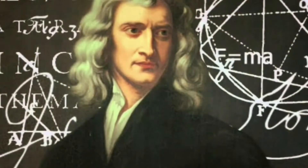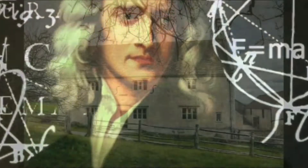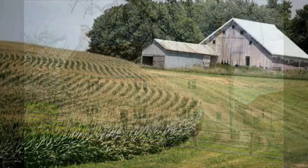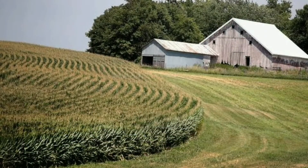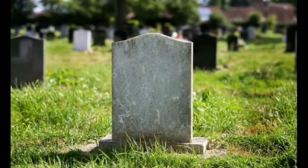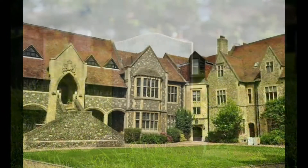He was a physicist, mathematician, and astronomer. He was born on 4th January 1643 in Woolsthorpe, England. He was a farmer's child; his father's name was Isaac Newton Sr. and his mother was Hannah Ascoff. His father died four months before his birth, and his mother remarried when he was three years old.